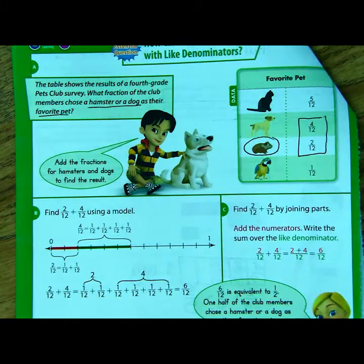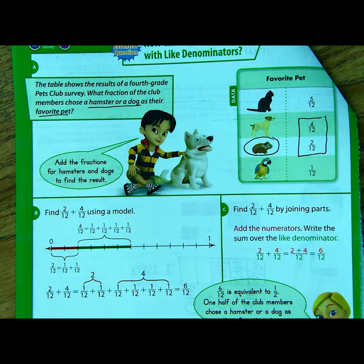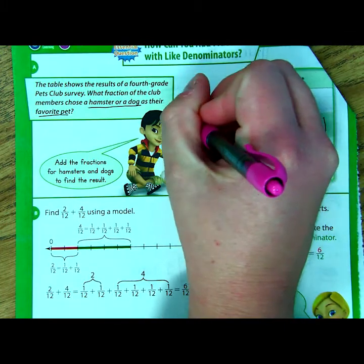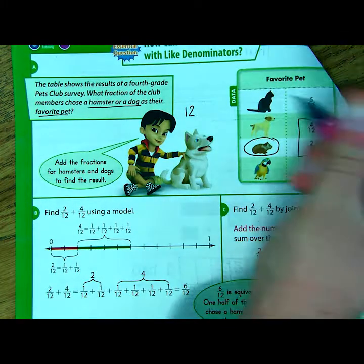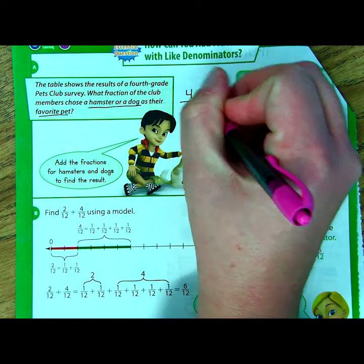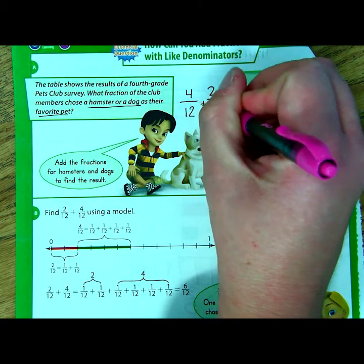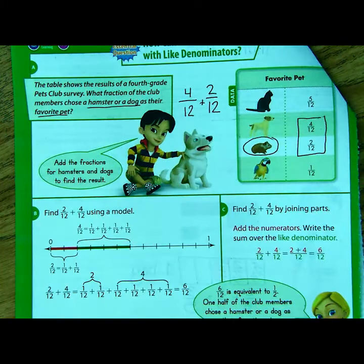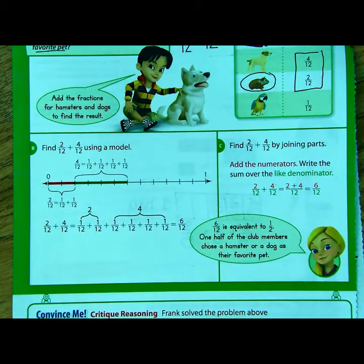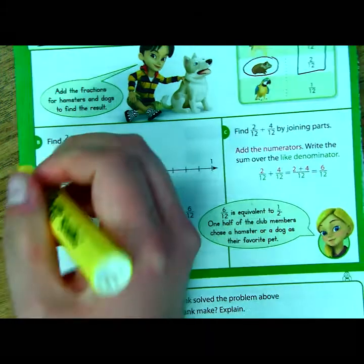So I know that when we have like denominators, meaning they're the same, you can just add those together. So I have four-twelfths who chose dog plus two-twelfths who chose hamster. So if I want to find out who chose a dog or a hamster, I will add those together. If you look right down here, they're showing that to you using a number line.